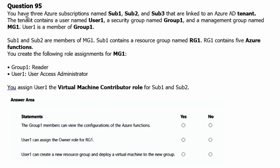You have three Azure subscriptions named Sub1, Sub2, and Sub3 that are linked to an Azure Active Directory tenant. The tenant contains a user named User1, a security group named Group1, and a management group named MG1. User1 is a member of Group1.